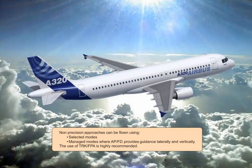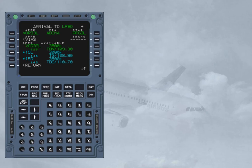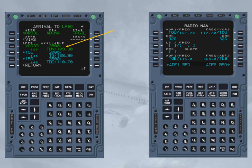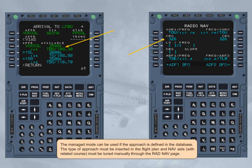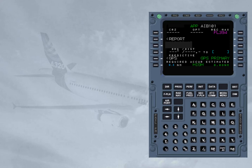Non-precision approaches can be flown using selected modes or managed modes where autopilot flight director provides guidance laterally and vertically. The use of track and flight path angle is highly recommended. The managed mode can be used if the approach is defined in the database; the type of approach must be inserted in the flight plan and nav-aids with related course must be tuned manually through the RADNAV page. Navigation accuracy must be cross-checked using raw data information versus the FMS position, unless GPS primary is displayed. If navigation accuracy is cross-checked low, the approach must be flown using selected modes — heading vertical speed or track flight path angle.